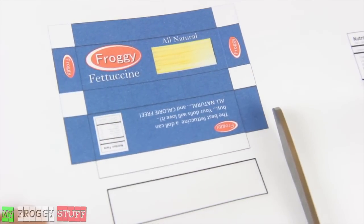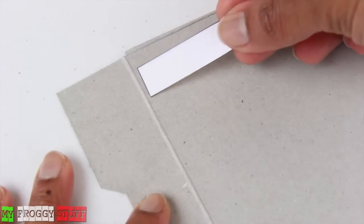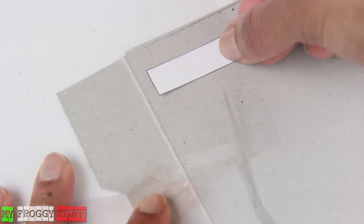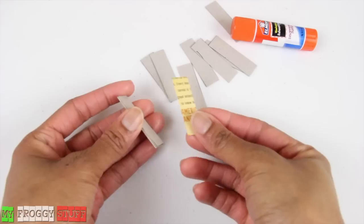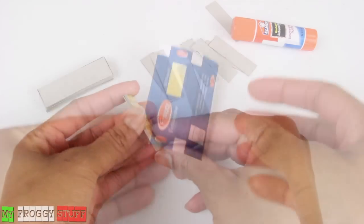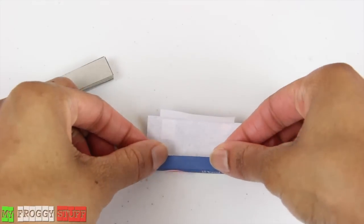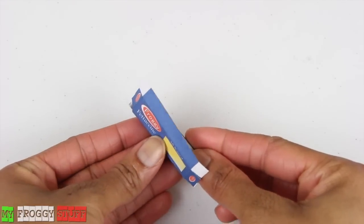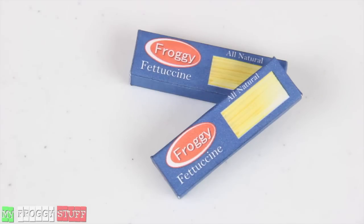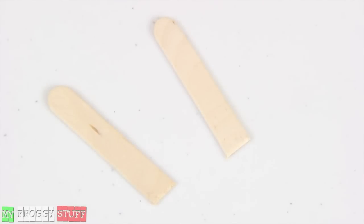Cut out the box printable and the small rectangle. Glue the rectangle onto a cereal box, cut it out, and use it as a pattern to trace several more. Cut, stack, and glue. Fold the printable on the lines, make small cuts at the ends, then wrap and glue around the paperboard to make a box of pasta.